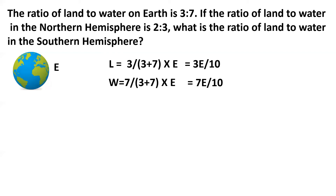Now let's come to the second line of the problem, which states the ratio of land to water in the northern hemisphere is approximately 2 to 3. The northern hemisphere is essentially one half of the earth. So if we represent the earth by E, then the northern hemisphere will be E by 2.